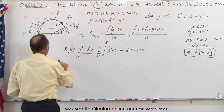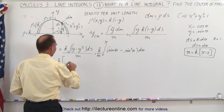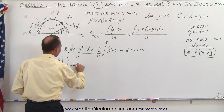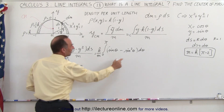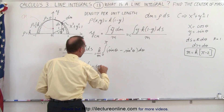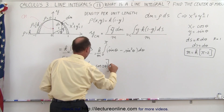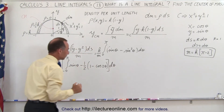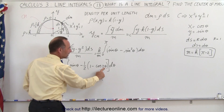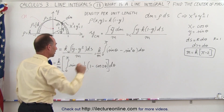This becomes k over m times the integral from 0 to pi of sine θ minus one-half times (1 minus cosine 2θ) dθ. Since we have cosine 2θ, we'll need a factor of 2 dθ, which we'll handle in the integration step. Now we're ready to integrate.